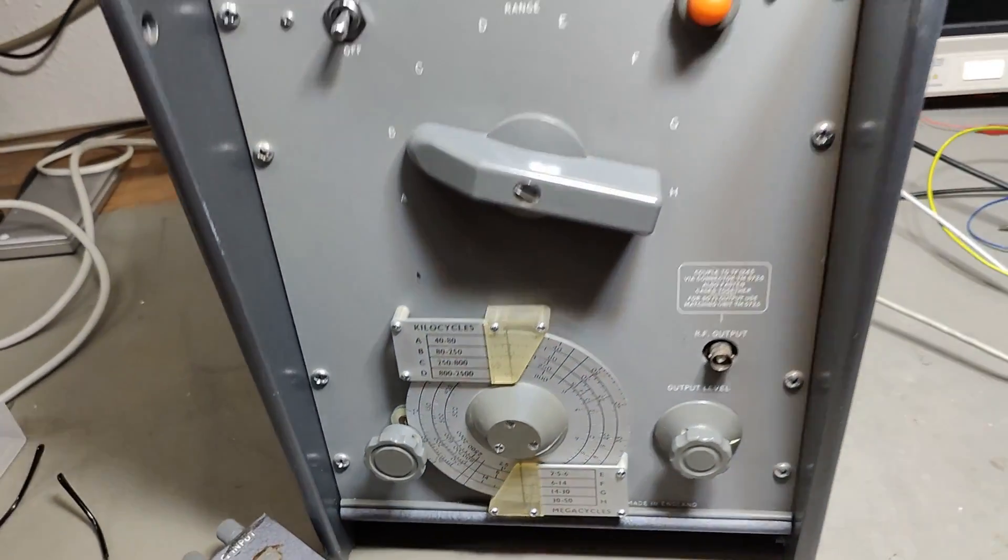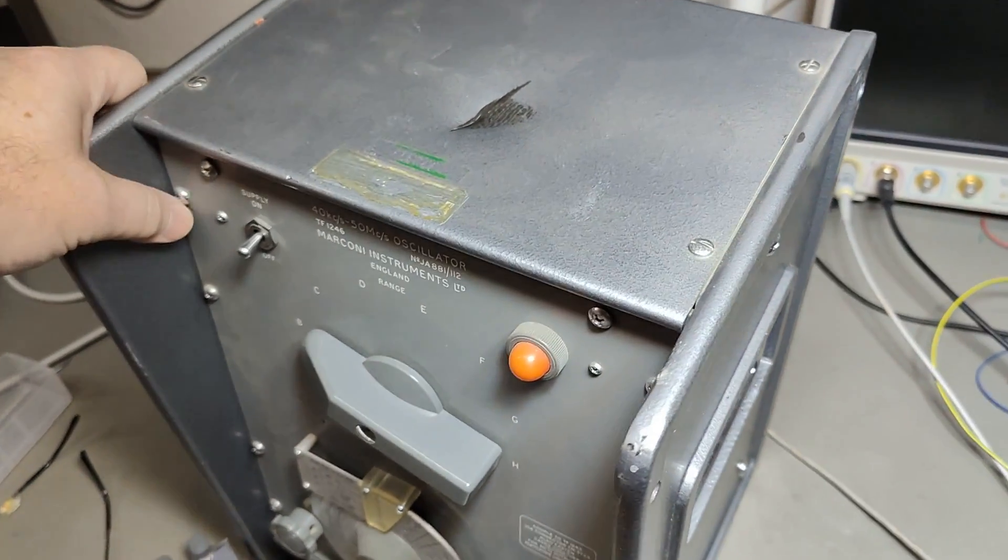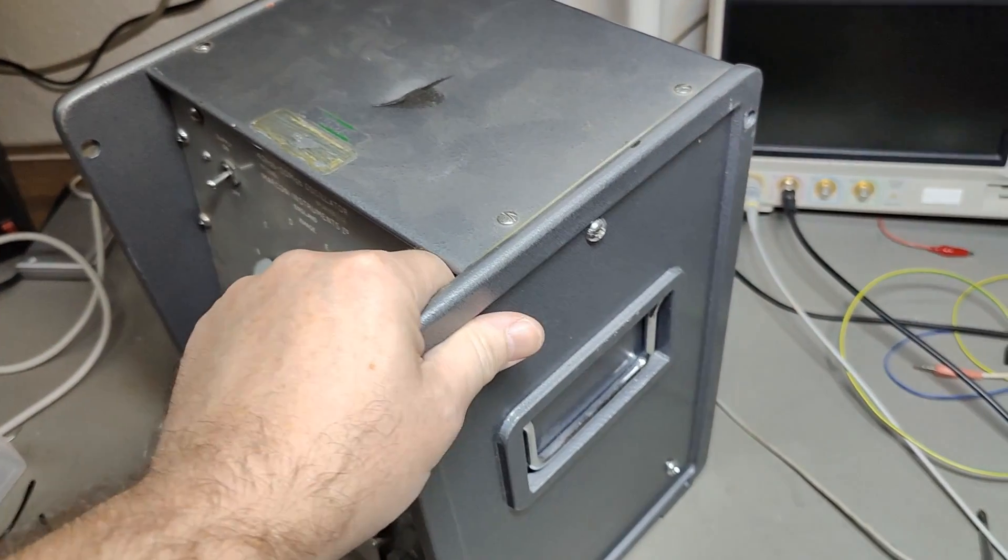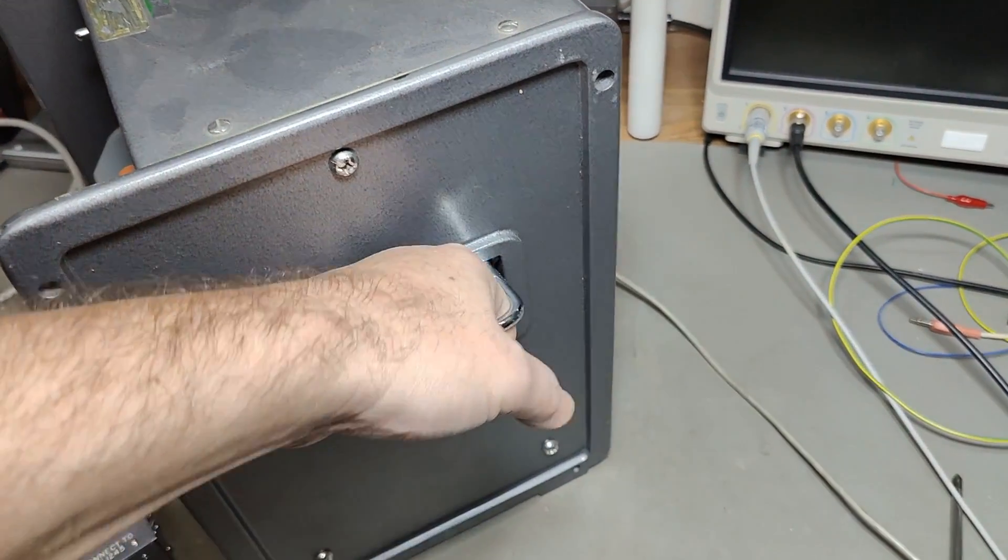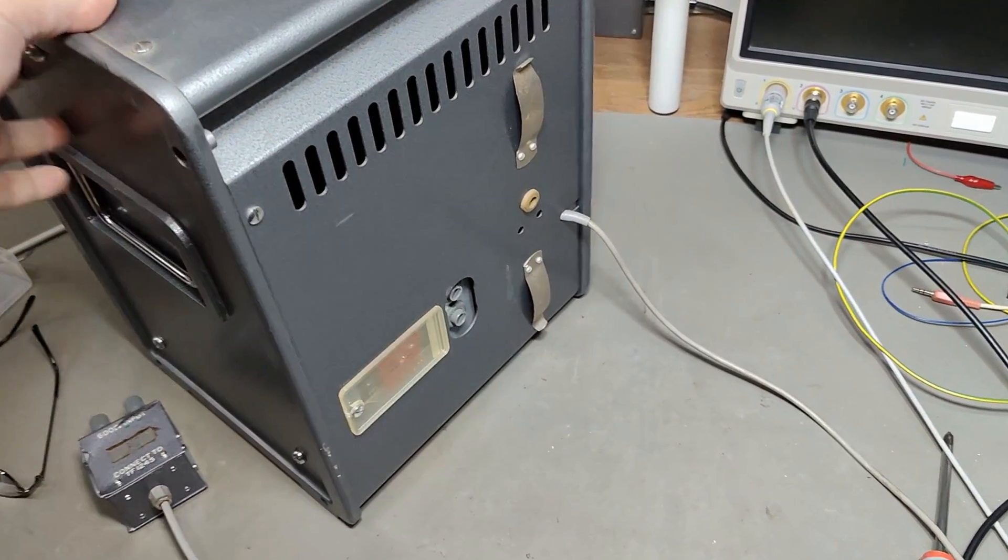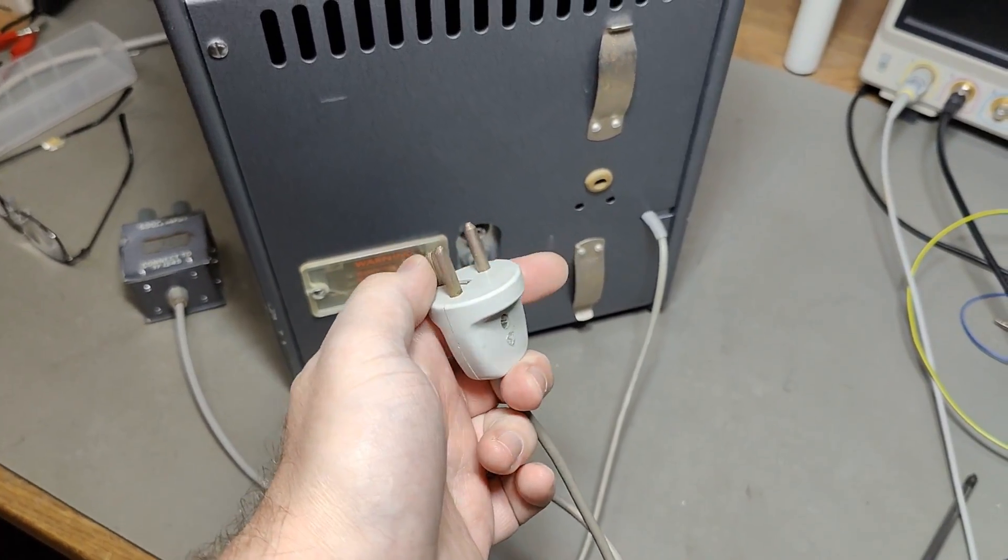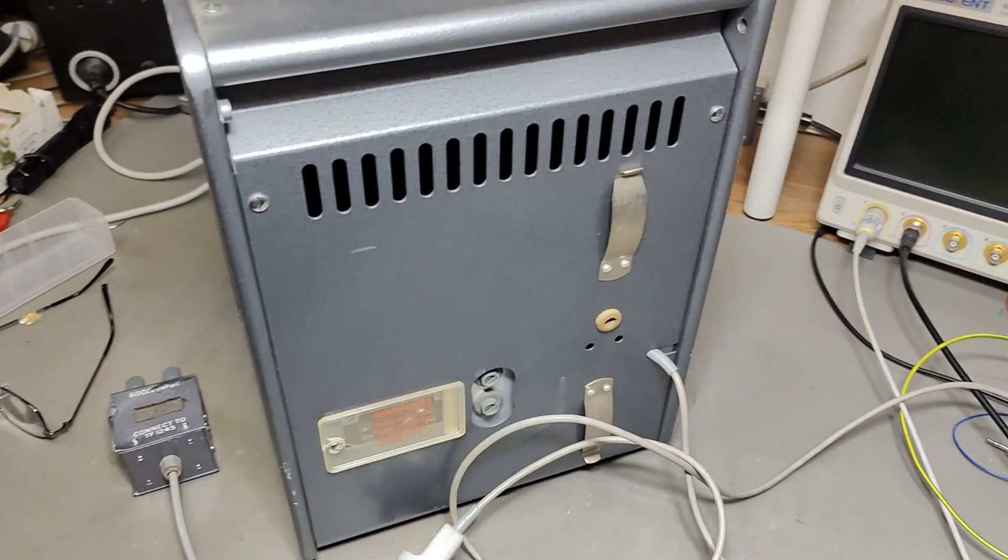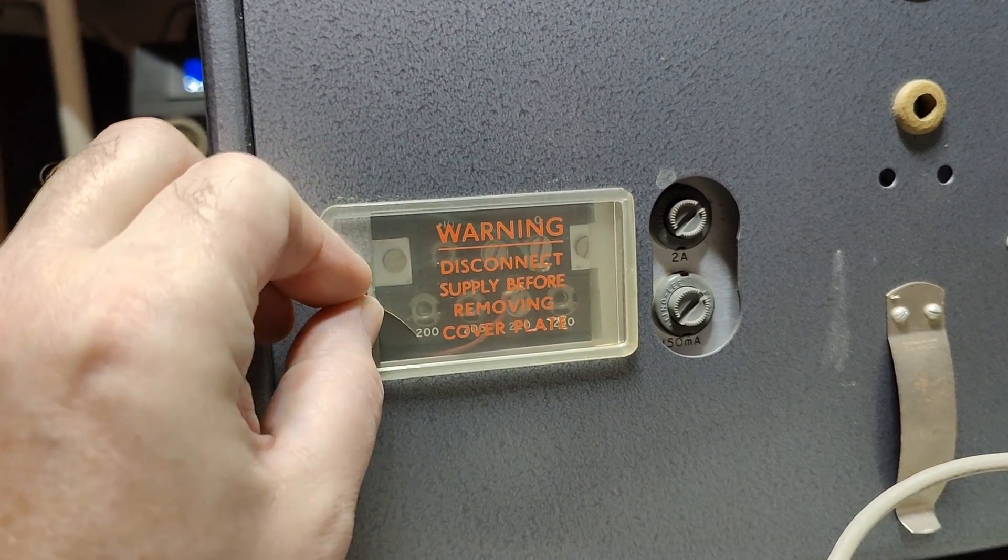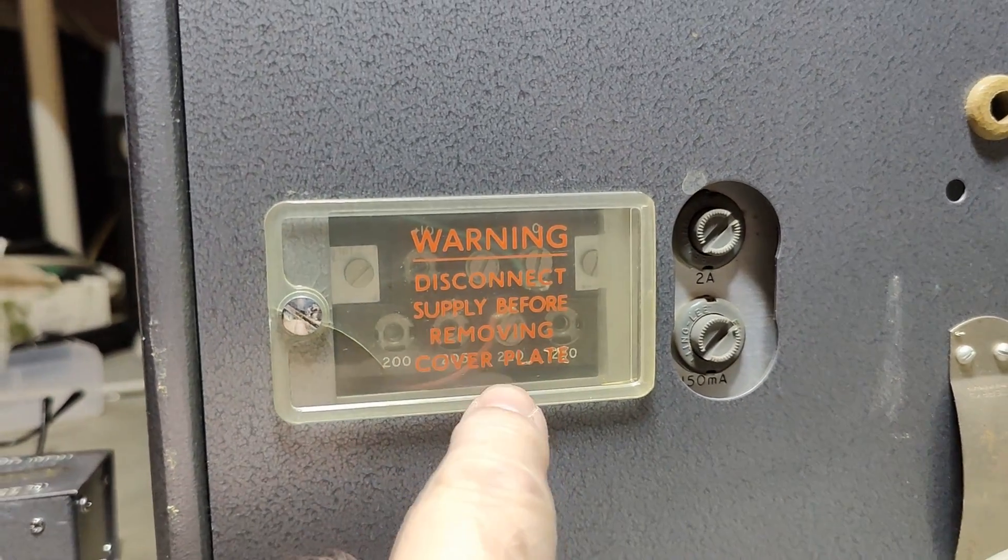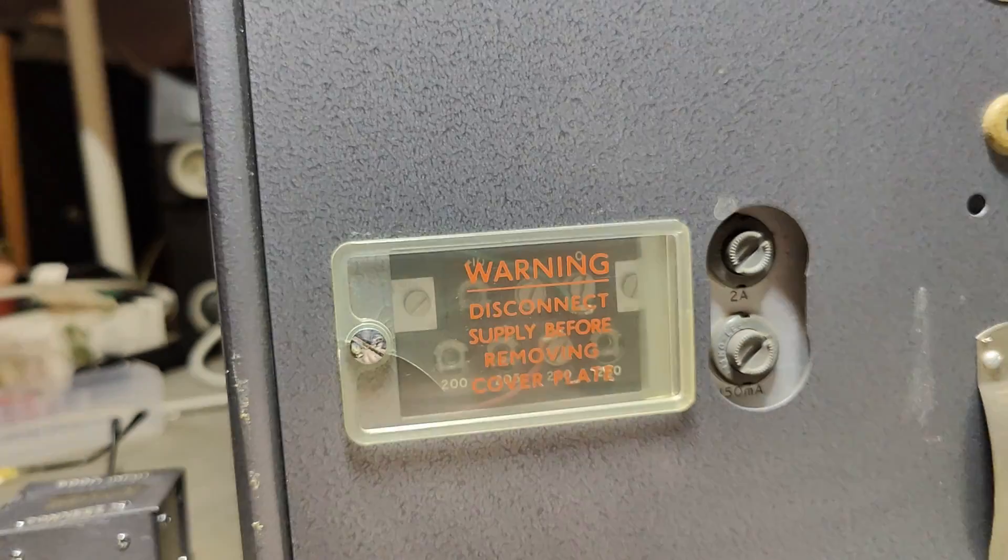This is what happens when people throw out stuff. And I think I need to open this and perform a real nice inspection. Because as you can see here, it was thrown out real bad. This is very, very heavy, this unit. I believe everything here is thick, thick metal. And good handles.